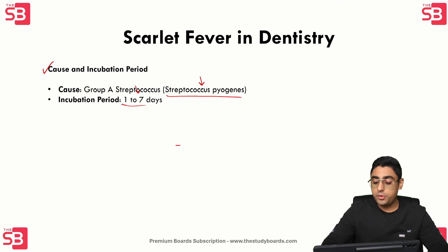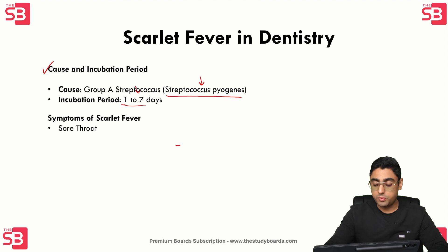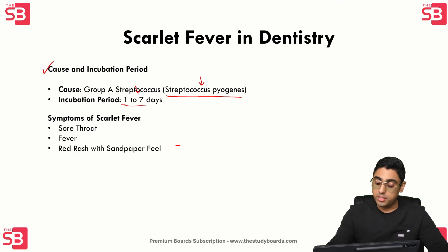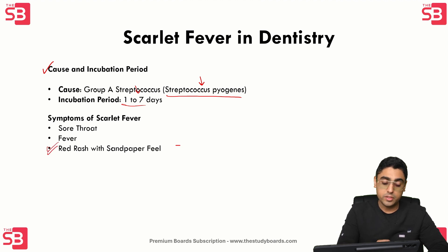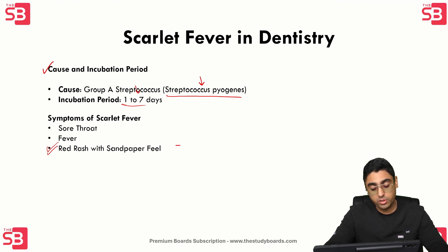Next, you need to know the symptoms the patient presents with. The patient will present with sore throat, fever, and a red rash with a sandpaper feel. This rash often begins on the chest and then spreads to other parts of the body — the examiner may ask from where it starts and how it spreads.